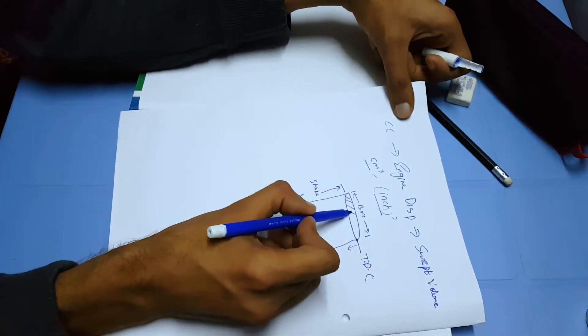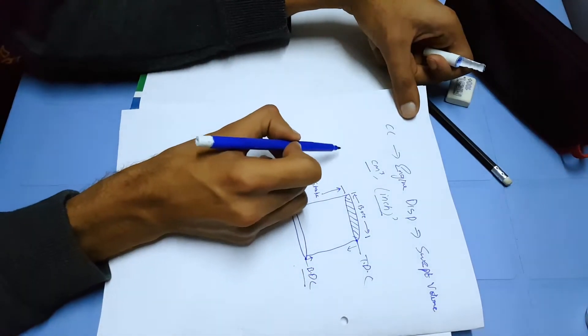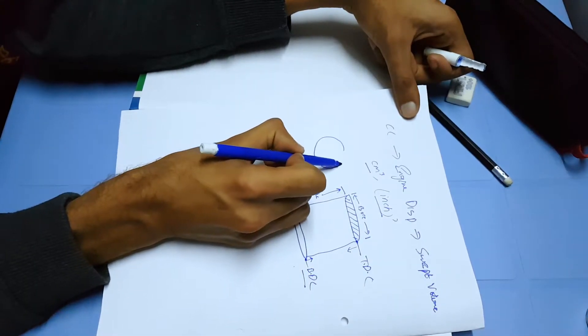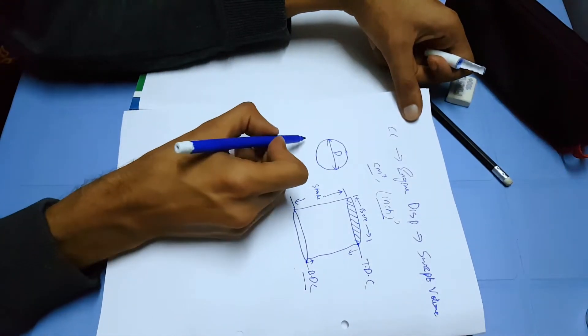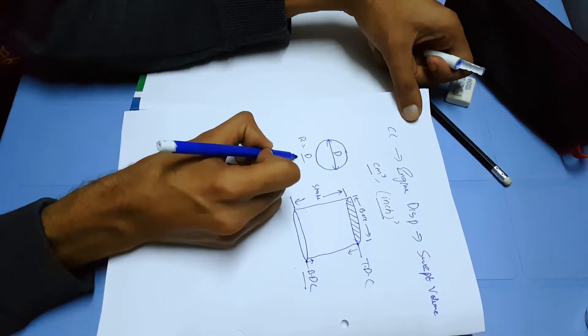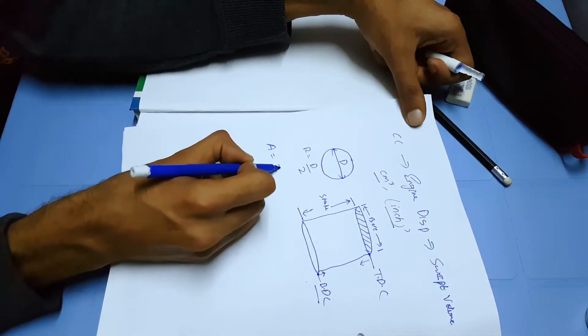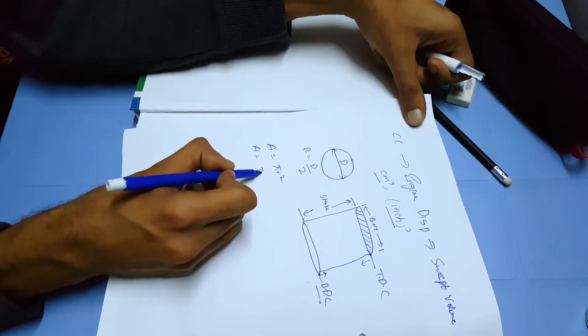First of all, you have to calculate the area of your cylinder. If you see from the top, it looks cylindrical. This is your diameter. All you have to do is find the radius, which is diameter divided by 2. Now calculate the area: for a circle it's pi r squared. The value of pi is 3.1416.